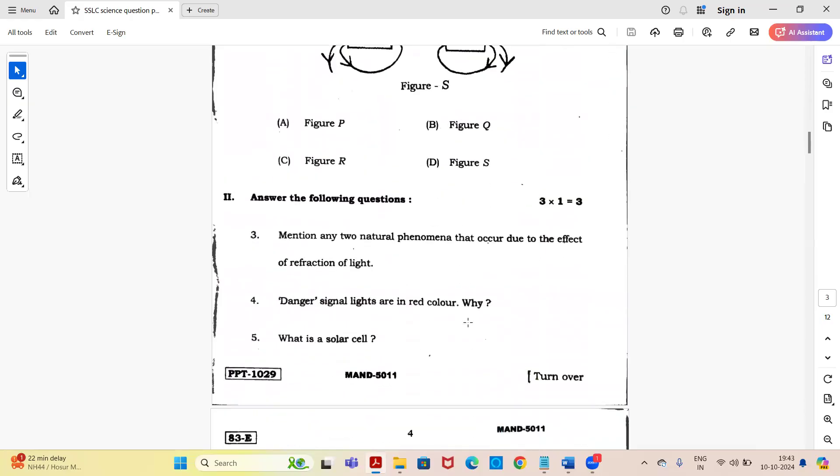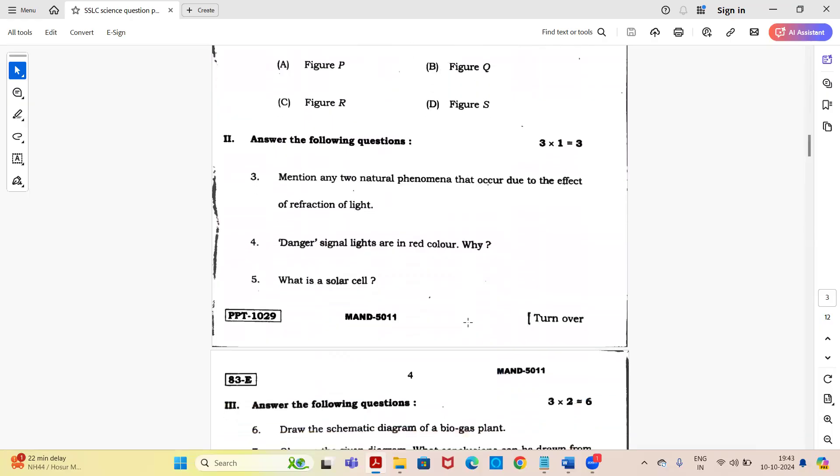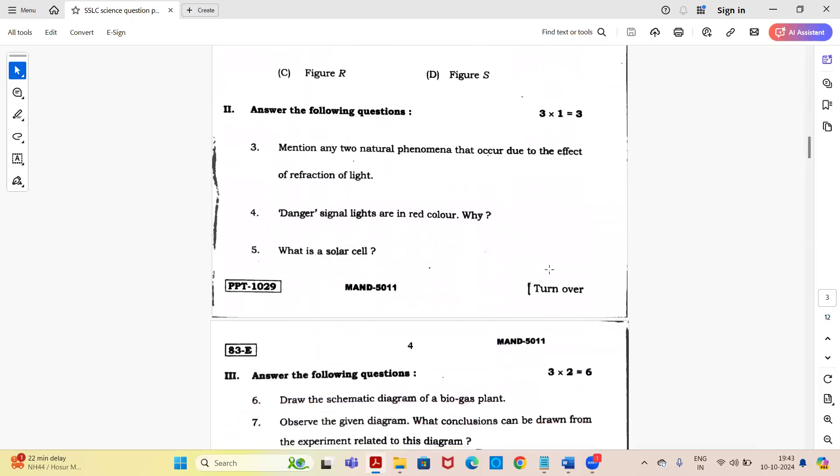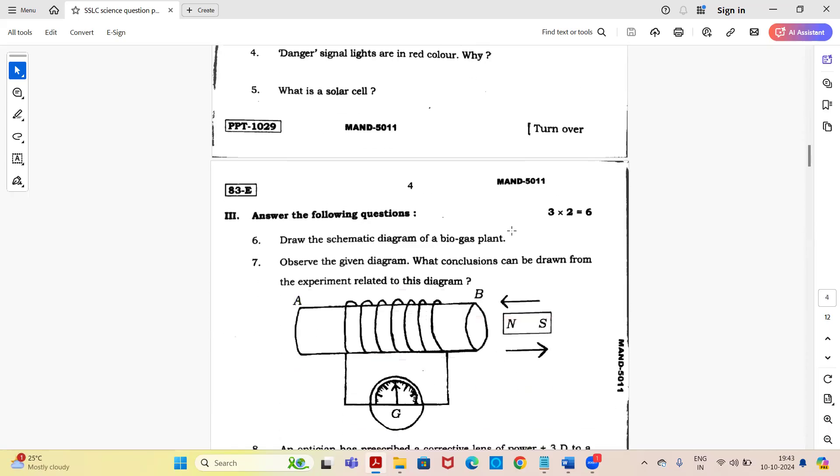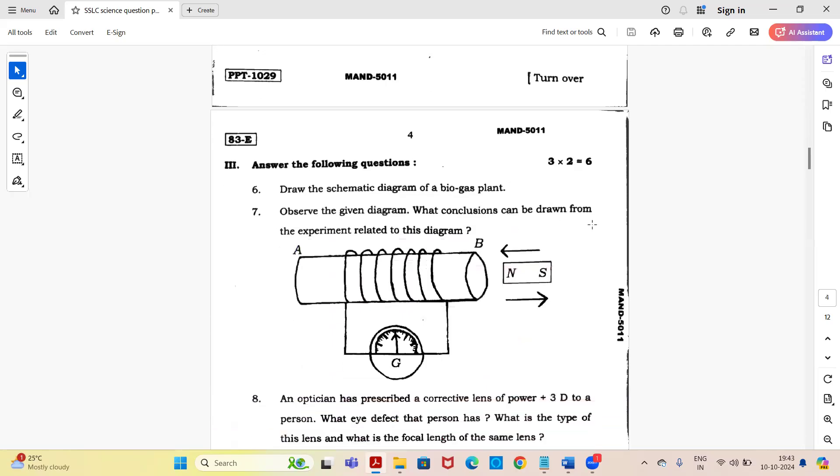Second main, answer the following questions for three marks. Mention any two natural phenomena that occur due to the effect of refraction of light. Danger signal lights are in red color, why? What is a solar cell? Third main, draw the schematic diagram of a biogas plant.